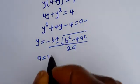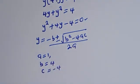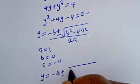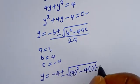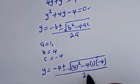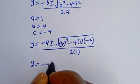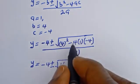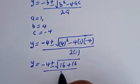From this equation, a is equal to 1, b is equal to 4, and c is equal to minus 4. Substituting: y is equal to minus 4 plus or minus square root of 4 squared minus 4 times 1 times minus 4, divided by 2 times 1. That gives us 16 plus 16 in the square root, divided by 2.